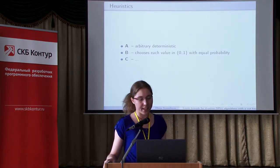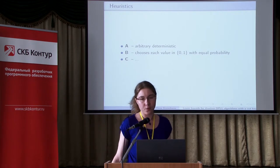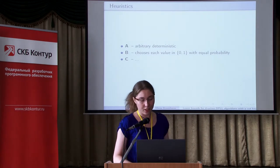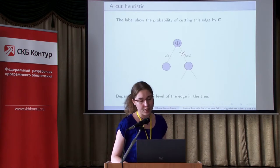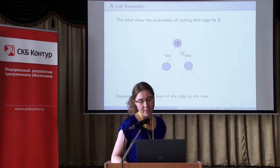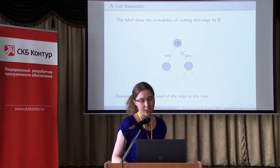In my case, it was arbitrary deterministic A; B, that chooses each of the Boolean values with equal probability — such B is called a drunken procedure; and C is also drunken and probabilistic. Each edge of the tree is labeled by the probability to be cut off, and this probability depends only on the level of the edge.